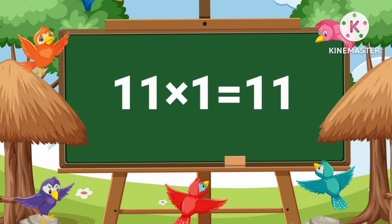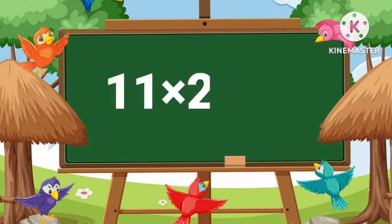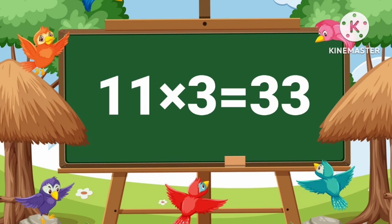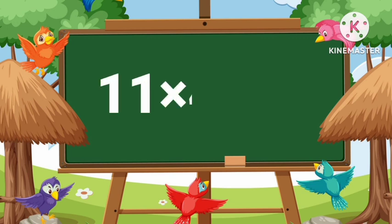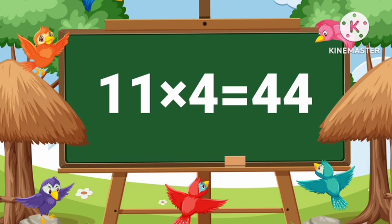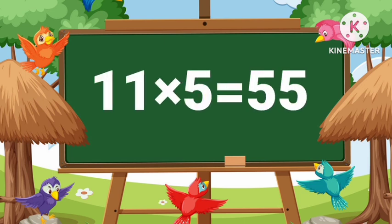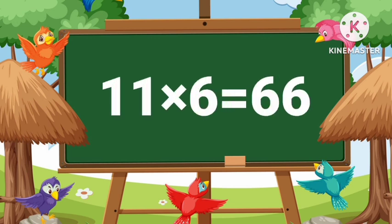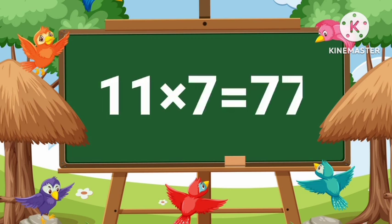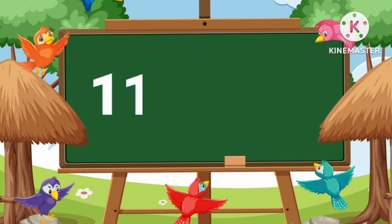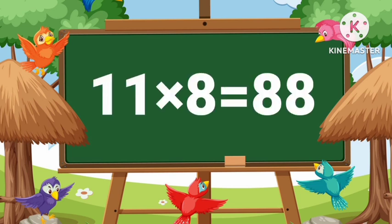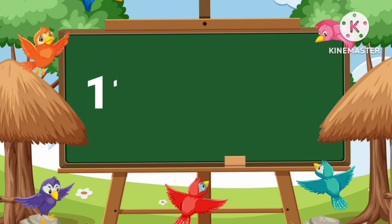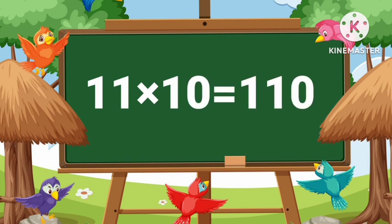Eleven ones are eleven. Eleven twos are twenty-two. Eleven threes are thirty-three. Eleven fours are forty-four. Eleven fives are fifty-five. Eleven sixes are sixty-six. Eleven sevens are seventy-seven. Eleven eights are eighty-eight. Eleven nines are ninety-nine. Eleven tens are one hundred ten.